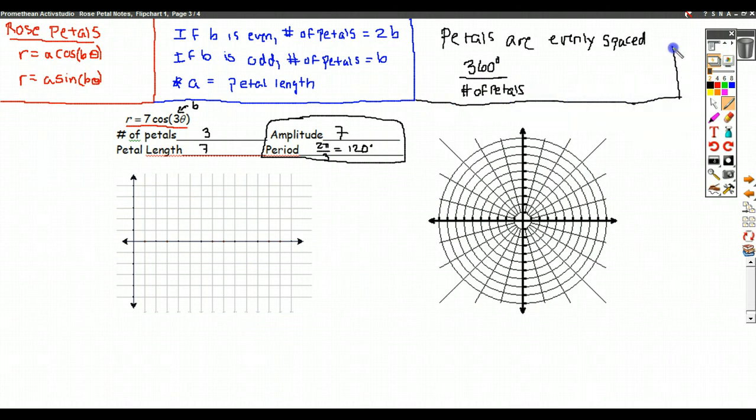So the only thing we really need to make graphing this really quick is we need to know where the first petal occurs. After that, we can just add the appropriate number of degrees to get to the next one over and over, and then we'll have our graph. So, in order to get your first petal, this is what you do. You graph only as much as you need in the rectangular form to get the first petal.